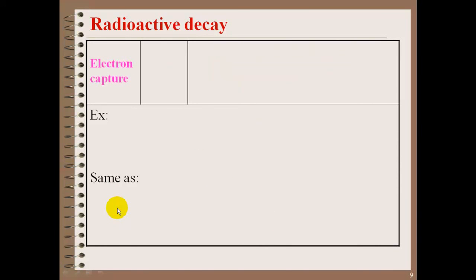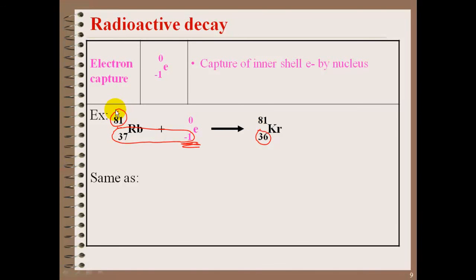Another type of decay is electron capture. Electron capture is actually when an electron from the electron cloud is basically pulled into the nucleus. You're going to notice that our electron is now on the reactant side. Every other type of radioactive decay, the particle was a product. But in this instance, an electron is taken into the nucleus. Here you'll notice the 37 decreases by 1 because it's a negative charge, but our mass stays the same. When we have rubidium-81 going through an electron capture, it creates krypton-81.